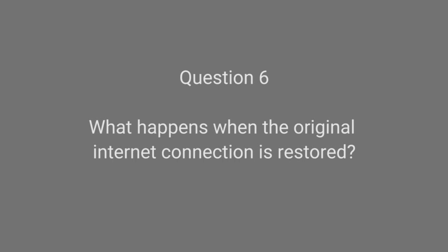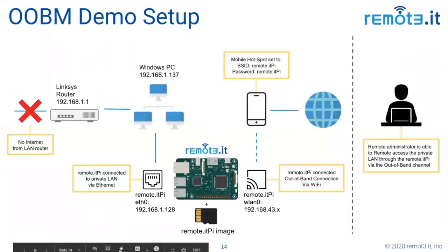When the original internet connection is restored, the clients on that LAN will resume their broadband connections through the gateway. Those clients do not have internet access through the cell phone or through the Remote.it Pi while we're in this mode. I want to make sure that's clear — out-of-band mode is a one-way inbound path to initiate connections. These clients do not have internet access this way.